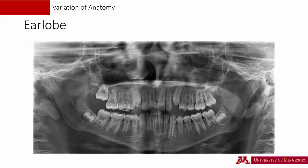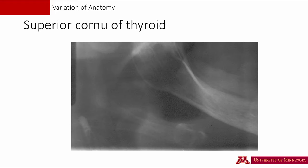Sometimes soft tissue normal anatomy may appear like a radiopacity. Prominent ear lobes sometimes appear as unusual structures — this is a normal anatomy and should not be confused with any kind of disease. A well-calcified superior corner of the thyroid may appear as an unusual area of calcification. This is a variation of normal anatomy and should not be confused with the triticeous cartilage. Here, the hyoid is visible, and superimposed over the hyoid is the superior corner of the thyroid.